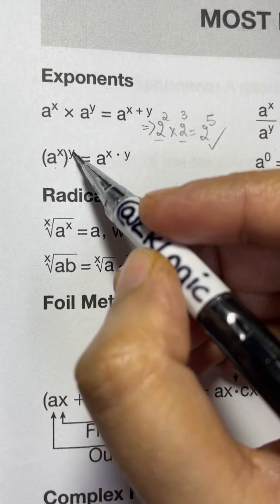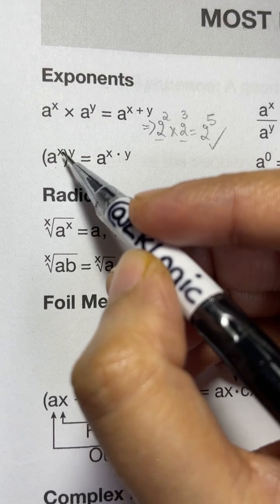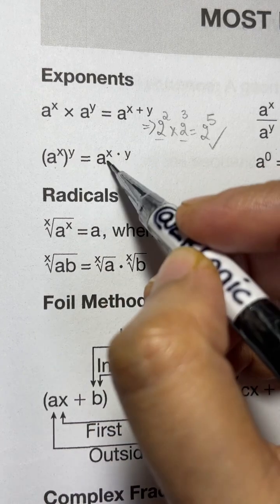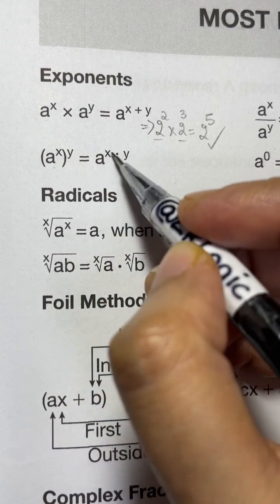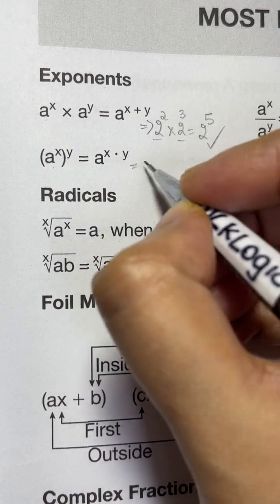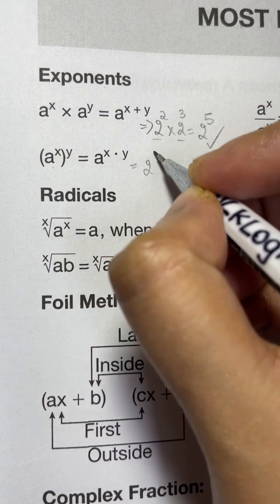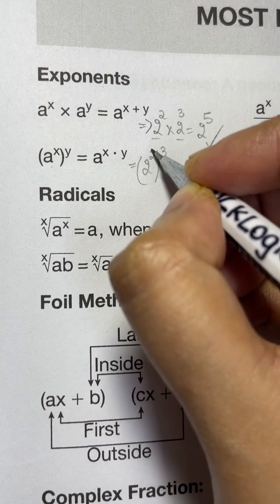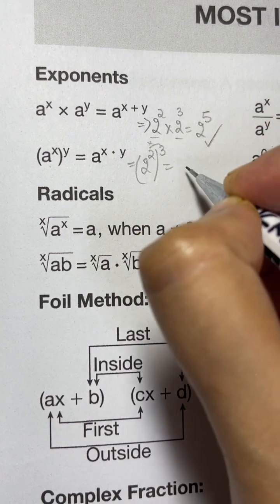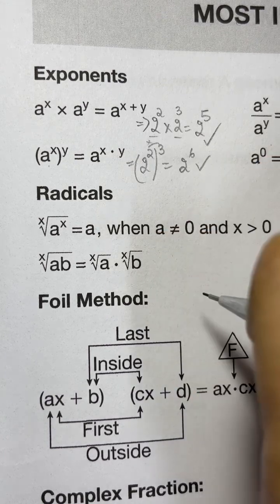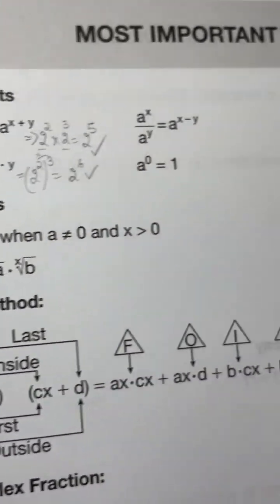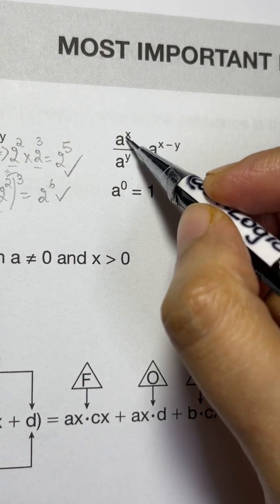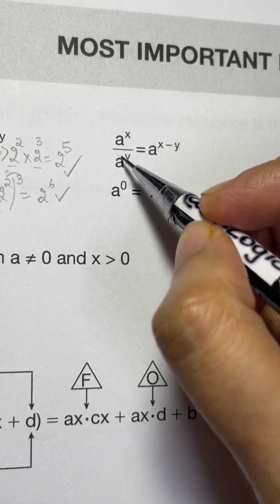The next rule: if you have a to the power of x, whole to the power of y — that is power to power — you multiply the powers: x times y. For example, two to the power of two, whole to the power of three: multiply them, two times three is six, giving two to the power of six.